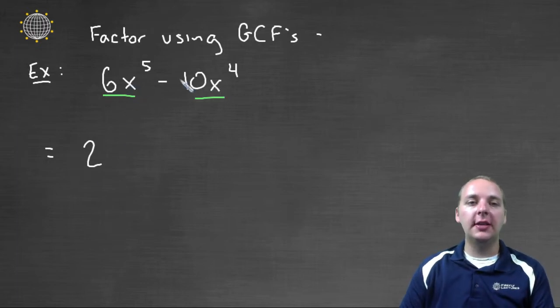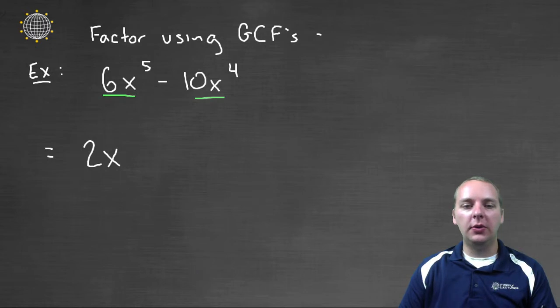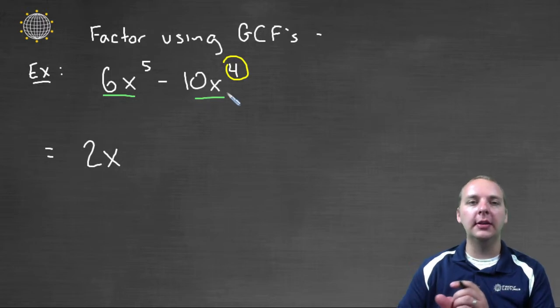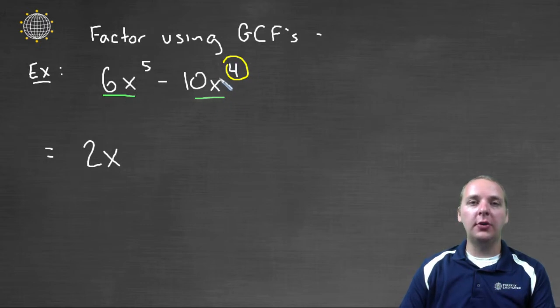And I also notice that they both have x's so there's at least an x in my GCF. But how many x's? Well to find that out you actually look at the x that has the smallest exponent. Because if you think about it, that's the most that these guys could have in common would be the smaller of the two possibilities. Because anything larger than that, the smaller term would not have that many. So we can pull out up to x⁴.